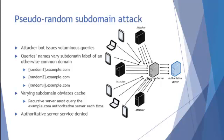What happens is the recursive server sends all of these queries to the example.com DNS servers, and basically ends up bringing those servers down in a denial-of-service attack. The use of the pseudo-random label really bypasses the cache on the recursive server. For each query, it's going to issue it against the example.com authoritative server, thereby bringing it down with all of these queries coming in from one or various recursive servers, denying service to that authoritative server.